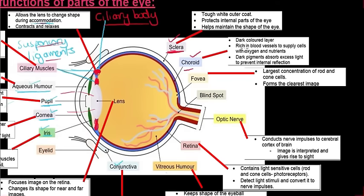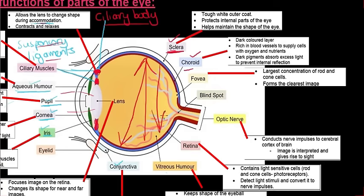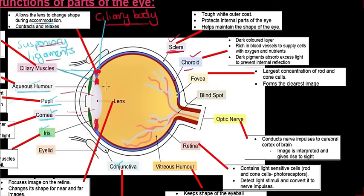Then there's the choroid, a dark layer just below the sclera. It is dark in color because it is rich in blood vessels that supply the cells of the eye with oxygen and nutrients. The dark pigments also help absorb excess light to prevent internal reflection — light bouncing around inside the eye — because darker materials absorb light rather than reflecting it.